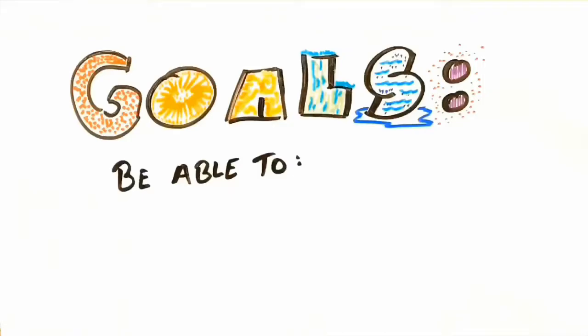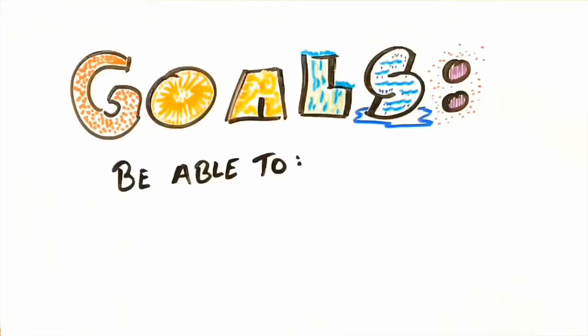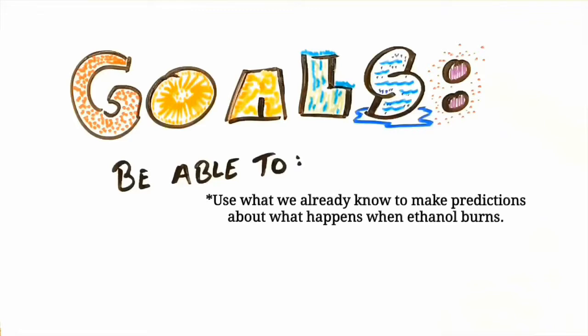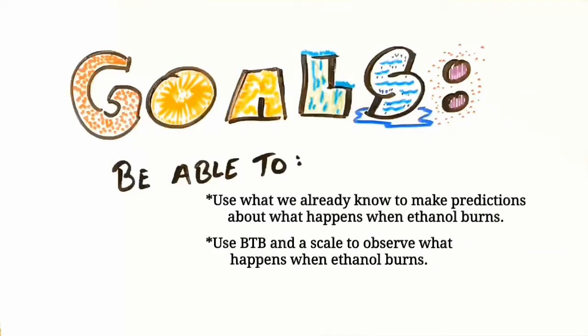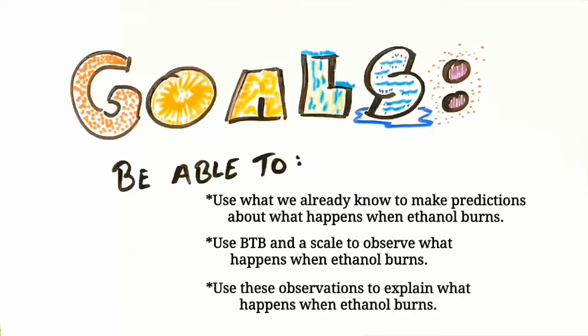Before we go, let's review our goals to make sure we met them all. You should be able to use what you already know to make predictions about what happens when ethanol burns, use BTB and a scale to observe what happens when ethanol burns, and then use our observations to explain what happens when ethanol burns.